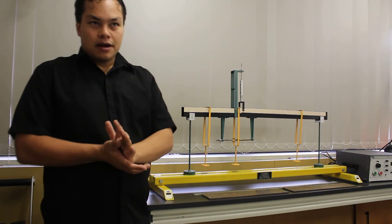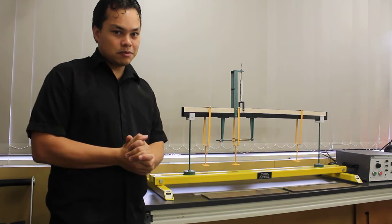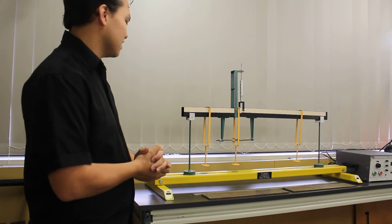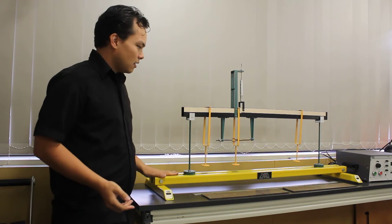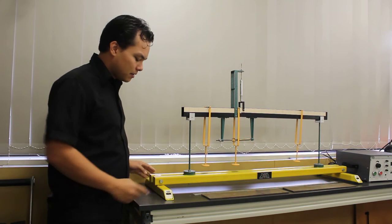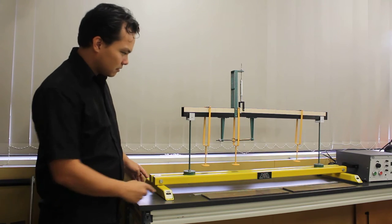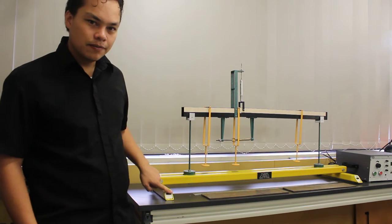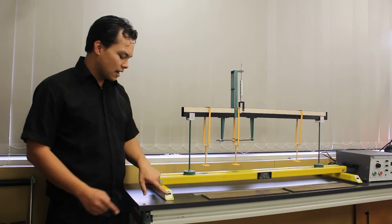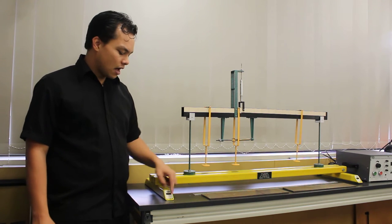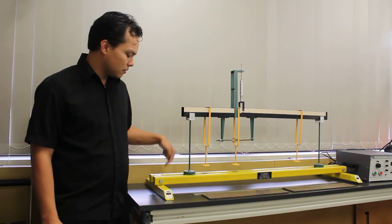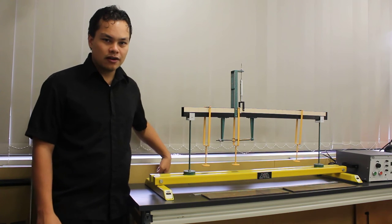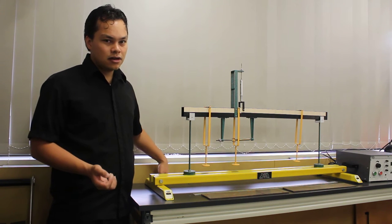So the first step in doing this experiment is to check that the device is level. This has previously been done, but on the front and on the backs of our device here we have adjustment knobs which are used to lift up little foot supports in the front and in the back of the ShearForce device.